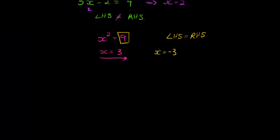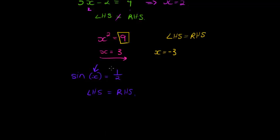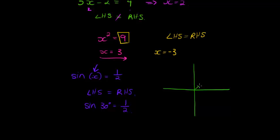A trigonometric equation is not much different — the idea is still the same. If I have an equation like sine of x equals a half, I want to know what value I must substitute for x so that the left-hand side equals the right-hand side. You might recognize this: sine of 30 degrees equals a half. In other words, if I have my CAST diagram with a 30-degree angle...